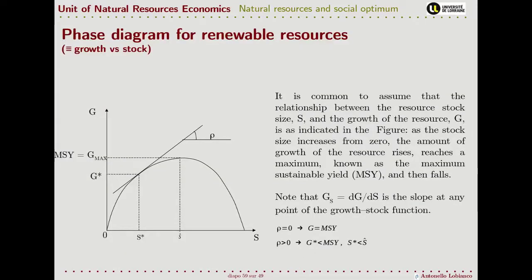Graphically, it is interesting to notice that only when the social discount rate is equal to zero — so we are indifferent between the present and the future — can we have an optimal solution where the steady state equals what is called the maximum sustainable yield, that is the highest possible level of growth. Whenever our society is a bit greedy for the present compared with the future, we have a solution where, at the steady state, the level of harvesting is below the maximum sustainable yield.